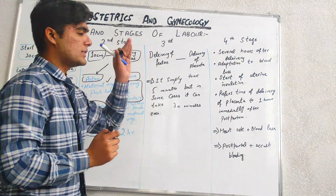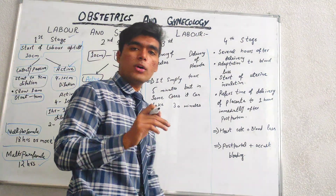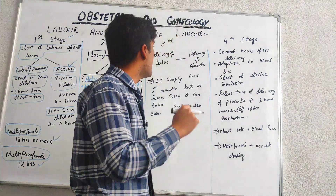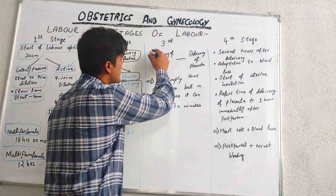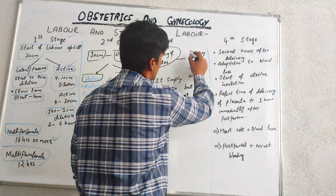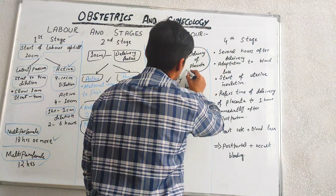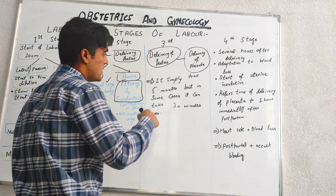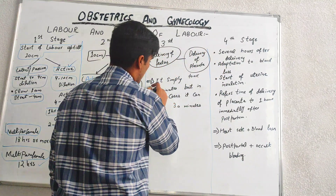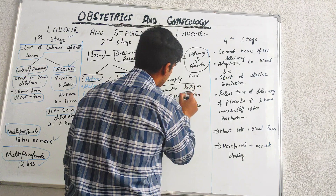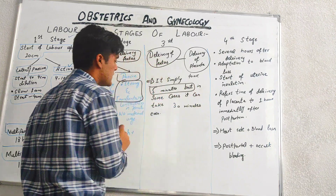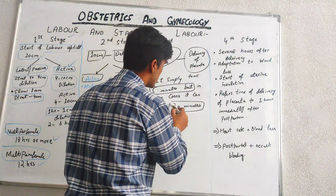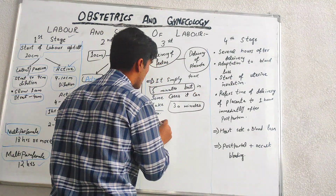The third stage of labour is basically from the delivery of the fetus to the delivery of the placenta. It simply takes around 5 minutes, but in some cases in reality it can take up to 30 minutes for completion.